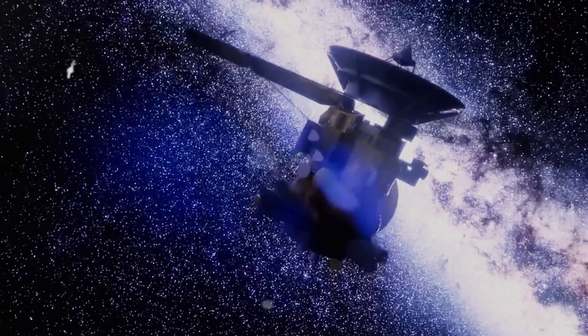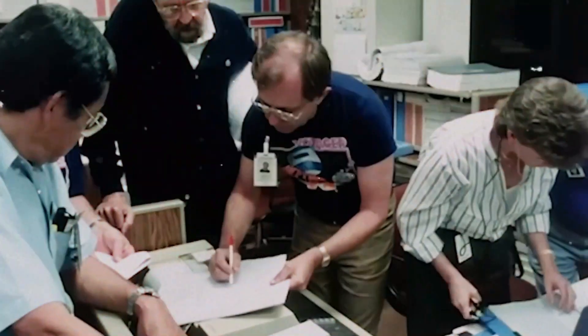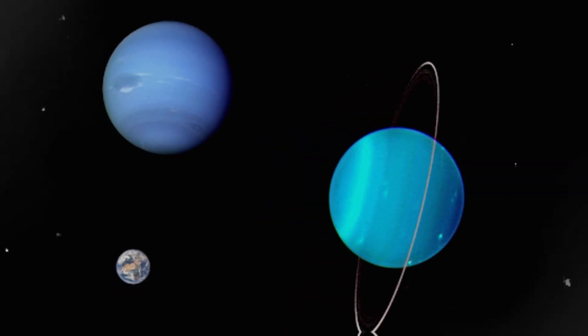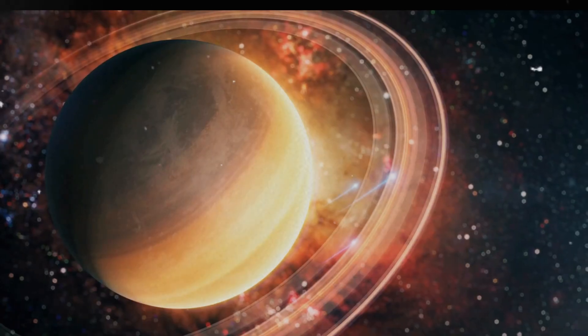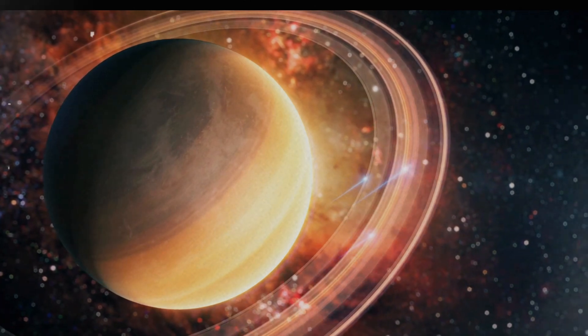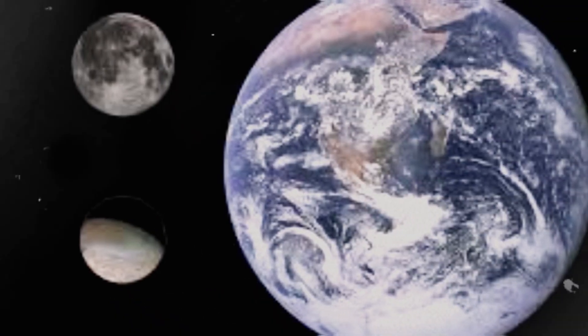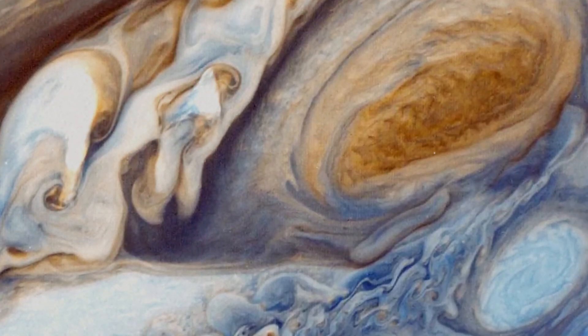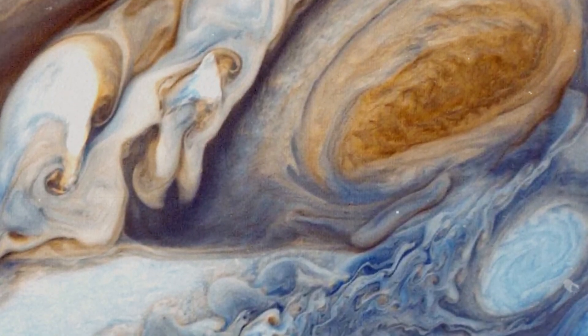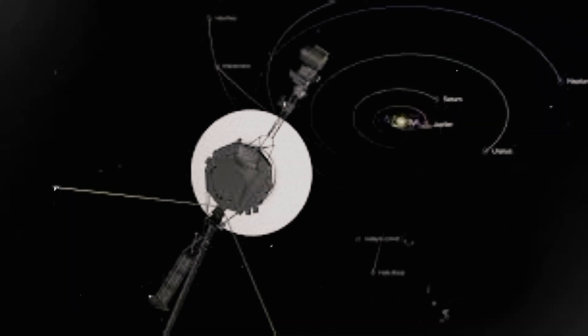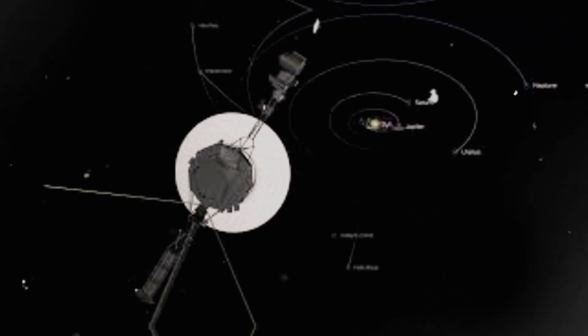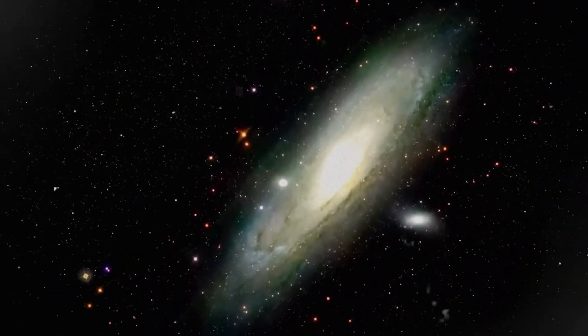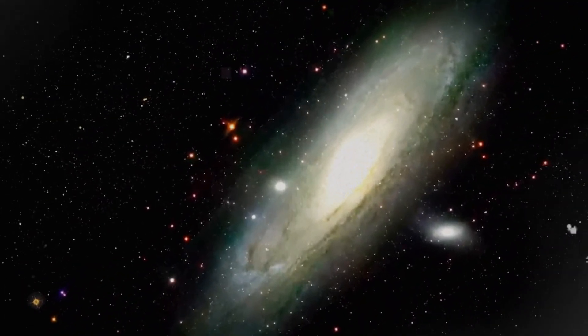Voyager 2's contributions are equally impressive. It provided the first close-up images of Uranus and Neptune, uncovering new moons, intricate rings, and complex atmospheres. Its observations of Neptune's moon Triton, with its nitrogen geysers, hinted at possible subsurface waters and potential extraterrestrial life. The ongoing analysis of Voyager data continues to offer new insights into ecosystems and interstellar space, enhancing our understanding of cosmic rays and the interstellar medium.